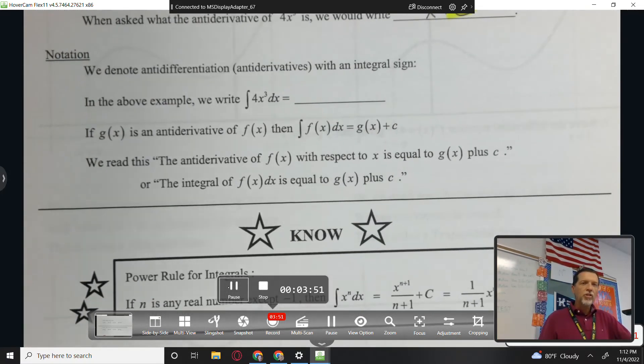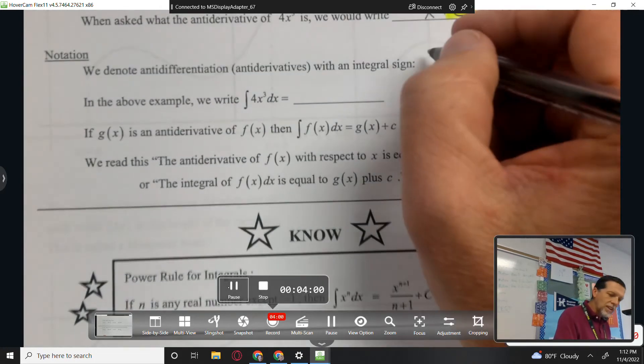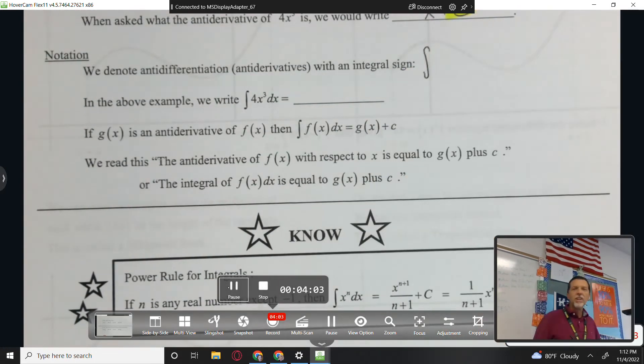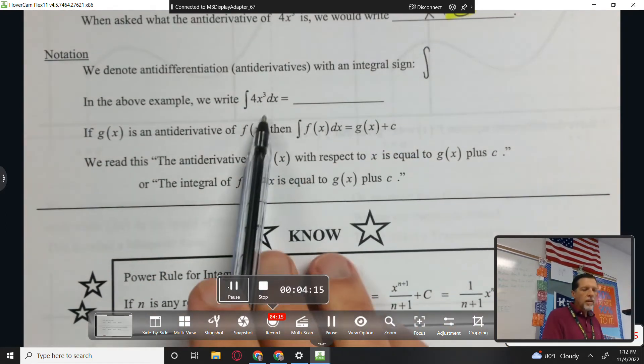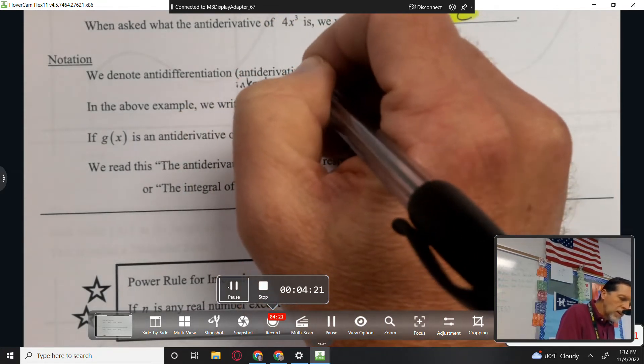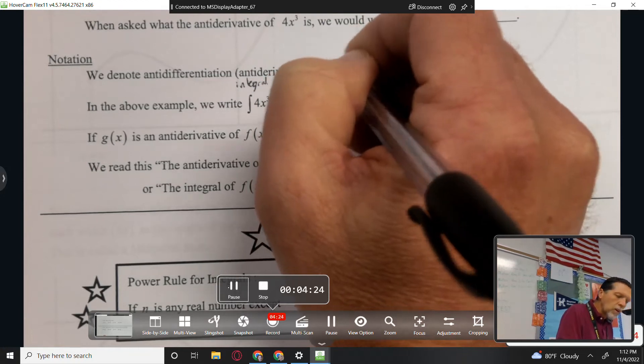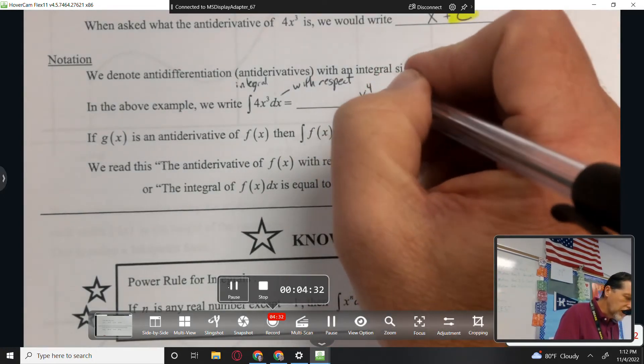All right, a little bit about notation. We denote antidifferentiation, antiderivatives, with an integral sign, but it looks like kind of an elongated s. We'll talk about why it's an elongated s on Monday. In the above example, we write the integral of 4x cubed dx. Integral. That dx means with respect to x, like what derivative are we underriving? What variable are we underriving with now? So x to the fourth plus c.